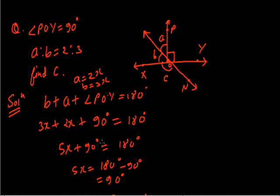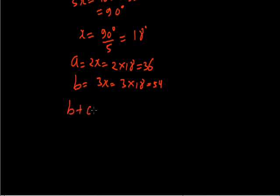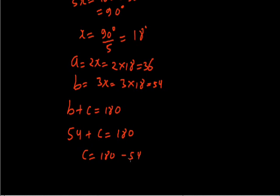From the figure, we can see that C is on a line. Let's say this point is M, so MN is a straight line. The sum of all angles on this line should be 180 degrees. So angle B plus angle C equals 180 degrees. We know that the value of B is 54, so 54 plus C equals 180 degrees. Therefore C equals 180 minus 54, which is 126 degrees. The required answer is 126 degrees.